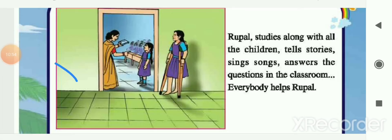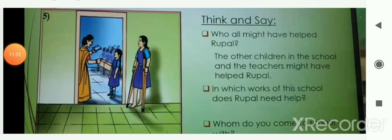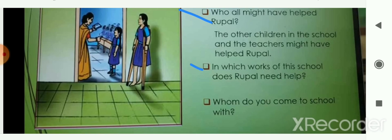In this picture, Rupal is already inside the school with her classmates and teacher. As we had seen, Rupal is very interested in studying. She studies along with all the other children, tells stories, sings songs, and answers questions in the classroom, and everybody helps her. Who all might have helped Rupal in school? The other children and teachers might have helped her. In which tasks does Rupal need help? She needs help during board work, while submitting homework, and while going to the washroom.